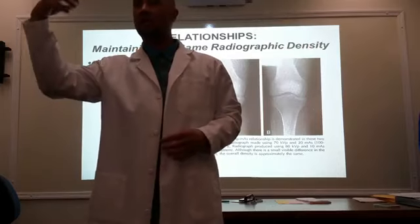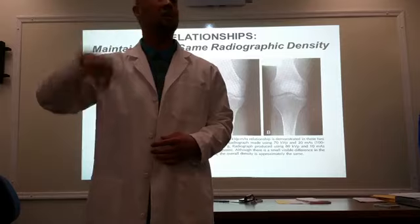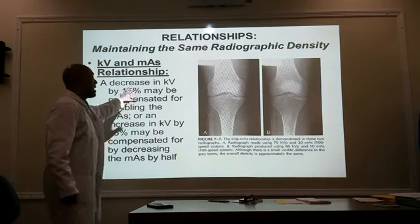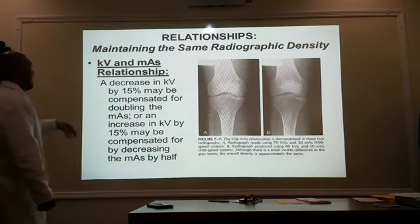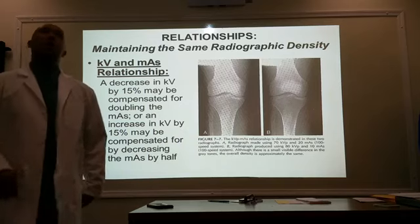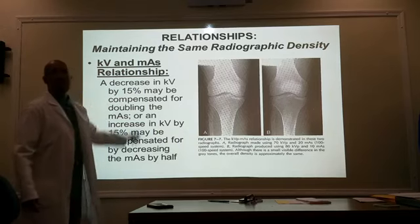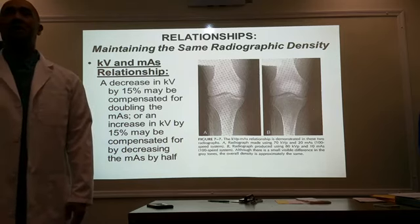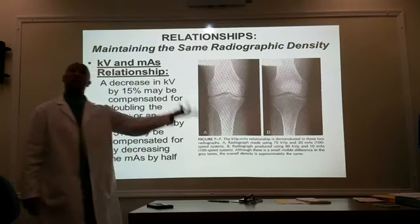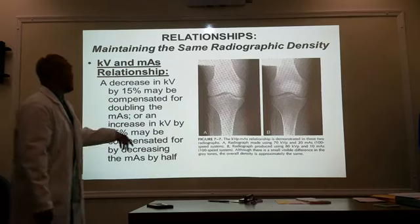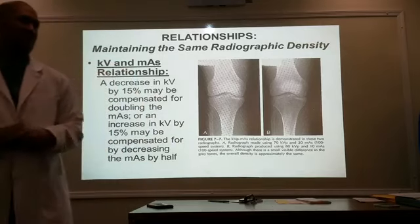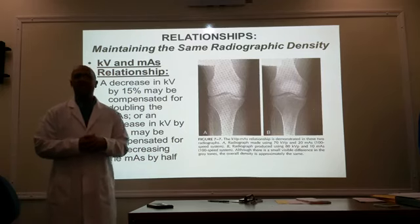Whether it be 15% for kV or doubling/halving for mAs, we're talking about either doubling it or cutting it in half. Here I have a radiograph. A decrease in kV by 15% may be compensated for by doubling the mAs. I decreased my kV by 15% — what happened to my overall density? It went down by half. Now I have a radiographic image that's too light. But the reason I decreased 15% is to control contrast, not density.